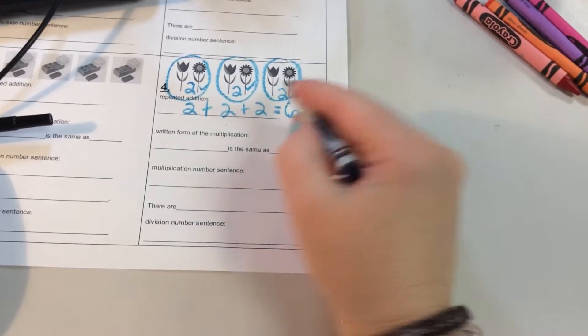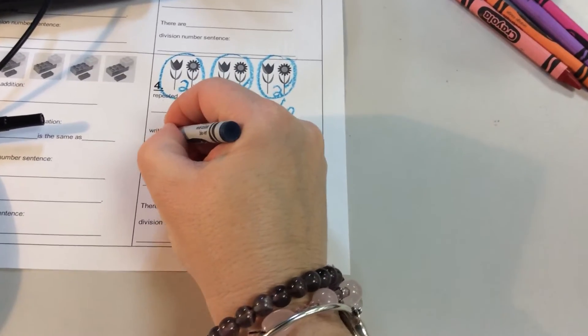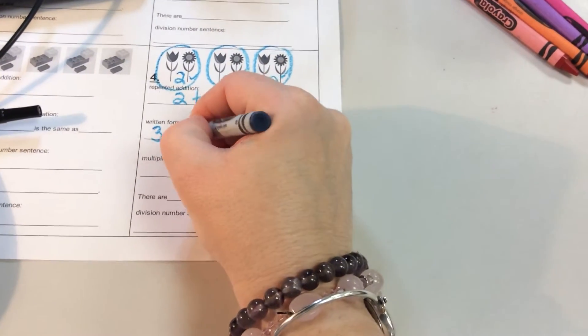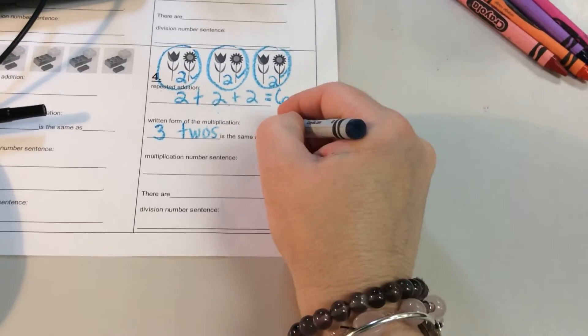Written form of the multiplication. How many twos do I have? I have three twos. And that's how we write that. We have three twos. It's the same as six.